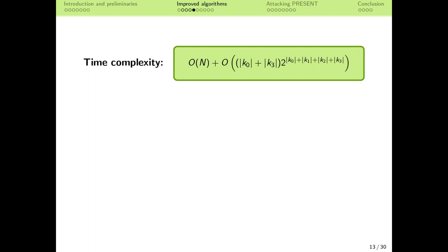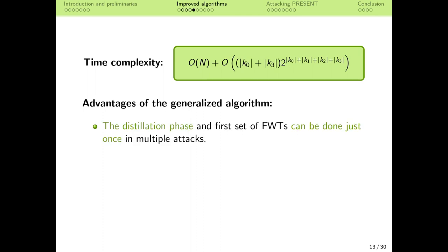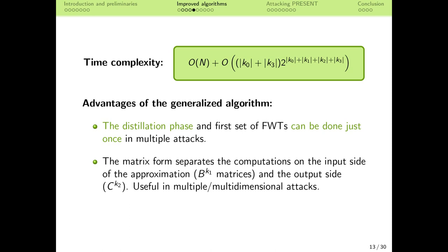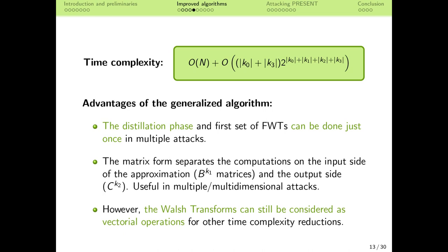The time complexity of this new algorithm is O(n) for the distillation phase. For the analysis phase, it is the number of bits of k0 and k3 times 2 to the total number of bits involved in the key recovery. Apart from covering multiple rounds, the new algorithm has further advantages: the distillation phase can be done just once in multiple and multidimensional attacks, saving significant time. The matrix description also allows us to separate k1 from k2, which can improve efficiency in multiple attacks where approximations share input or output masks. Finally, the Walsh transforms can still be seen as purely vectorial operations to perform other optimizations.